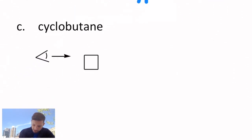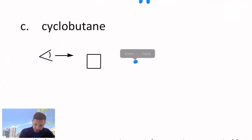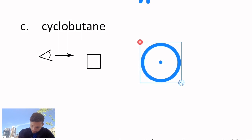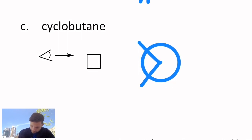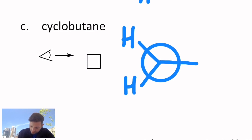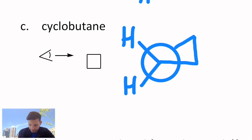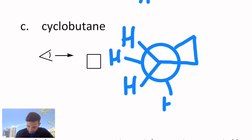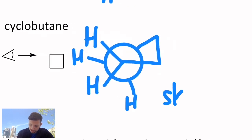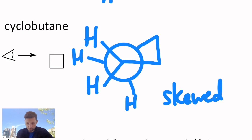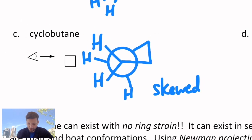Cyclobutane isn't too much better. Starting with a Newman template, I can pucker it just a little bit, so you can actually get a conformation that's a little bit better than being perfectly eclipsed — you can get what looks like a skewed conformation. It's still highly strained, but not as bad as a cyclopropane ring in terms of the eclipsing interactions.